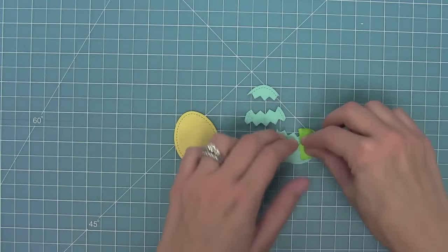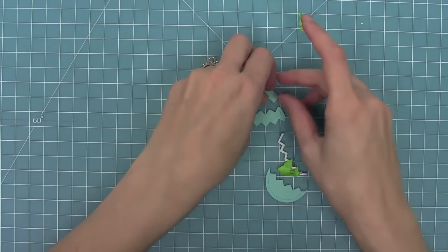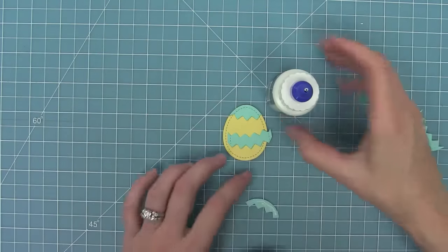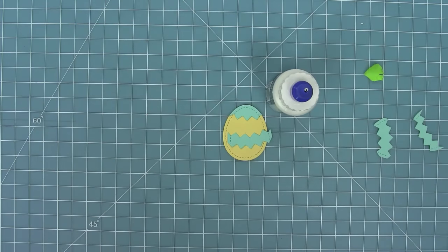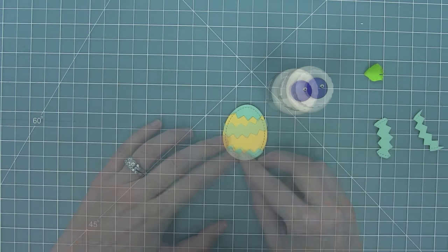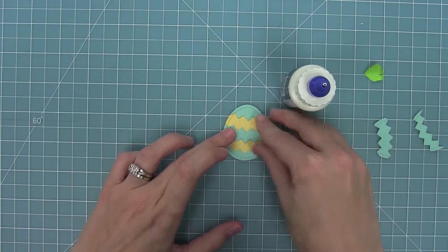Once I'm all done cutting those pieces I'm going to layer them on my little yellow base egg. I'll take some liquid glue and line those pieces up and it's actually going to create a really cute little chevron egg. I love that there are so many ways to decorate these eggs, it's really really fun.